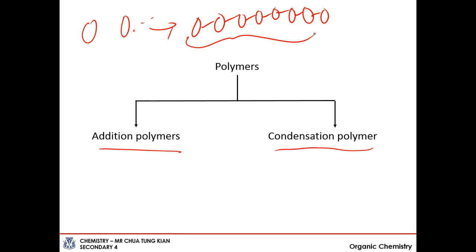Condensation polymerization is a little bit more complicated. It involves the monomers coming together to form the polymer as usual, but with the loss of a small molecule. We will touch more on this later on.